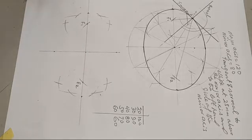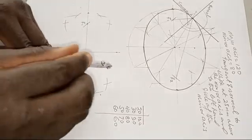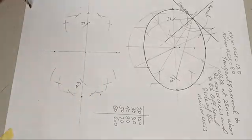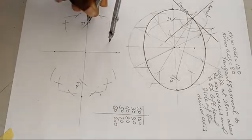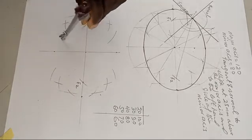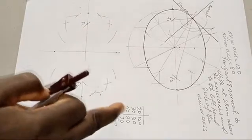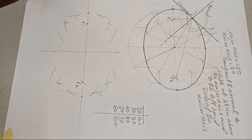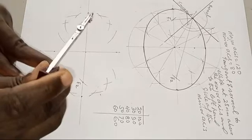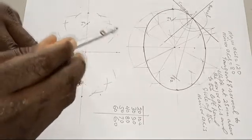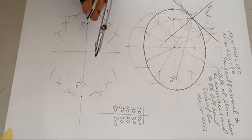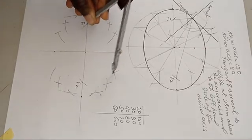Next pair: 40 and 80. Measure 40 on your compass, go to F2 and mark arcs above and below, then go to F1 and mark arcs above and below. Now measure 80 on your compass. Stay on F1 and intersect the arcs, then go to F2 and intersect those arcs.